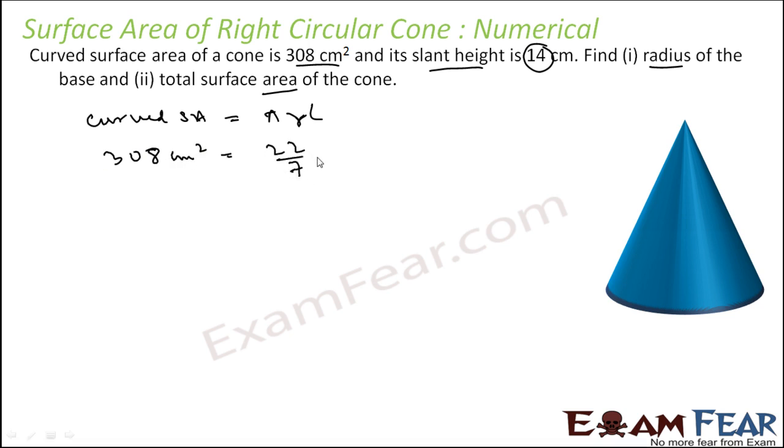So we know that curved SA is nothing but pi R L. Let us put the value 308 cm square as pi, that is 22 by 7 into R. R has to find, slant height L is given. So you solve this, and this is 14 cm. So you solve this, you get R as 7 cm. One part is solved. Pretty easy.